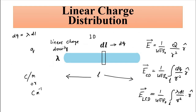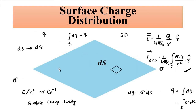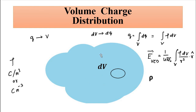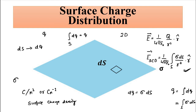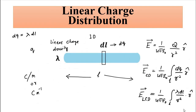To summarize, we discussed the electric field intensity due to linear charge distribution, where charge is distributed over a straight line; surface charge distribution, where charge is uniformly distributed over a surface area; and volume charge distribution, where charge is distributed over a volume. I hope you liked this video. Please subscribe to my channel Engineering Tutorial for more videos related to engineering, science, and technology. Have a great day, thank you.